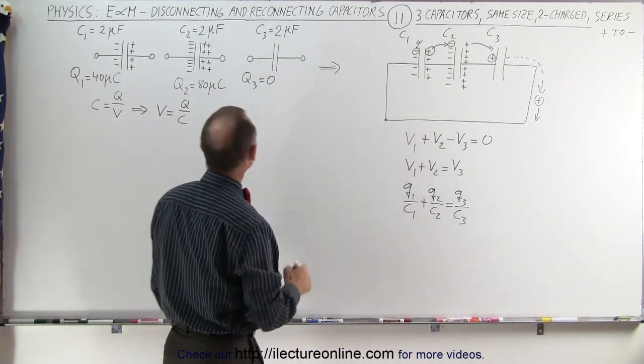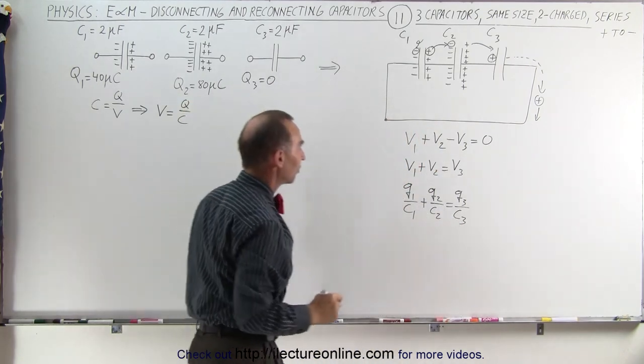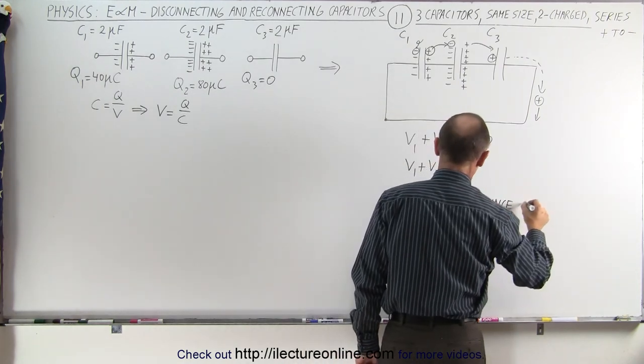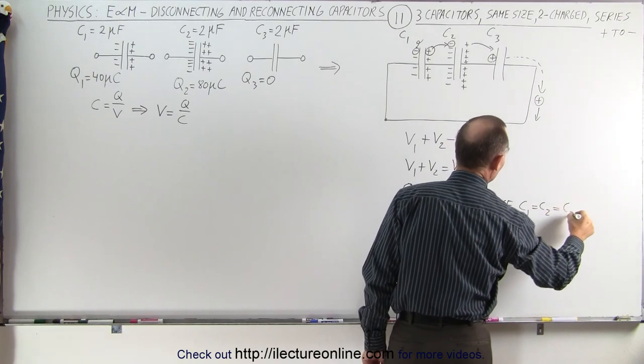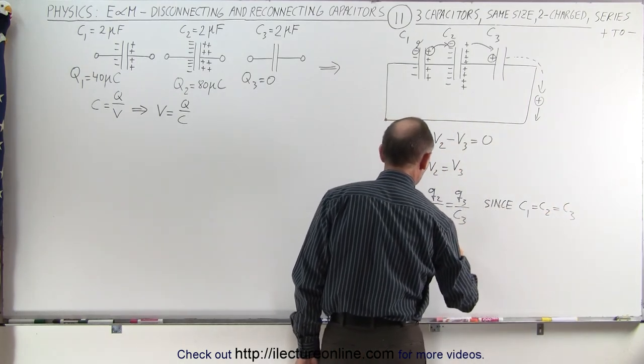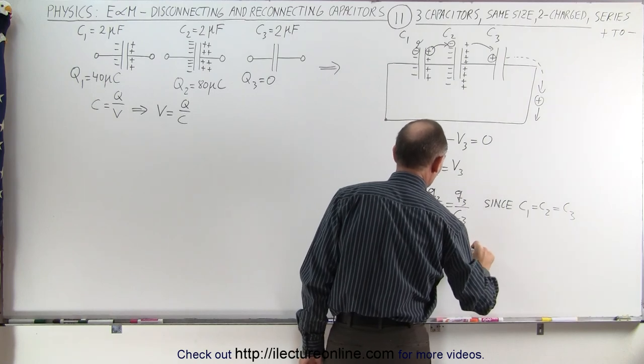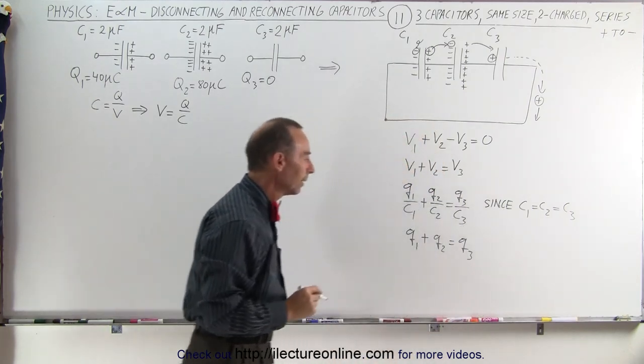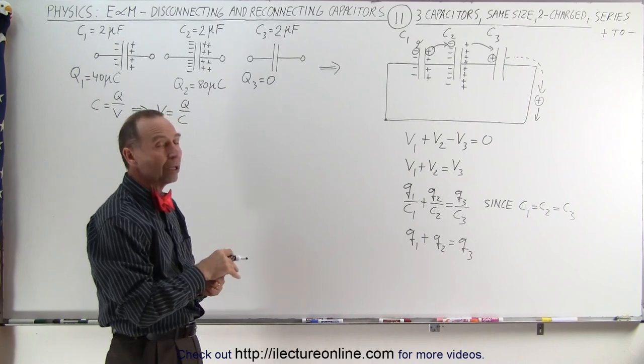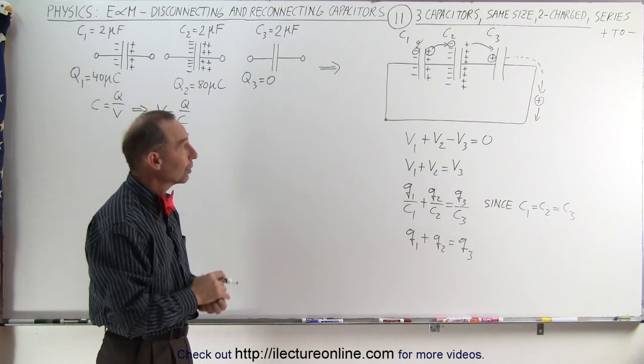Next, we realize that in this example, all the capacitances are the same. Since C1 is equal to C2 is equal to C3, we can write this as Q1 plus Q2 is equal to Q3. And we still need to find some other relationships between Q1 and Q2, and Q3 as well.